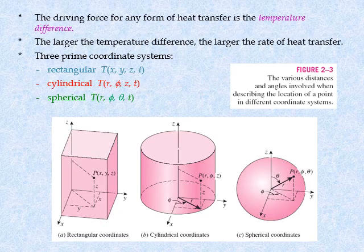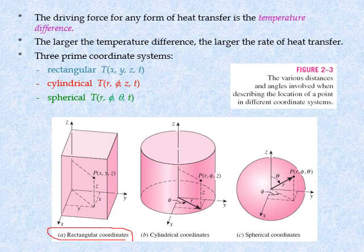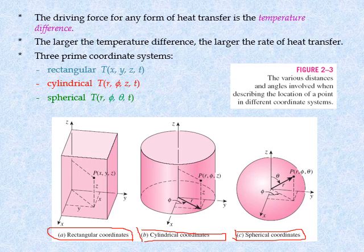The driving force for any form of heat transfer is the temperature difference. If a body has a temperature difference, there will definitely be heat transfer — the larger the temperature difference, the larger the heat transfer rate. Heat transfer can be analyzed through three prime coordinate systems: the rectangular system (x, y, z with time t), the cylindrical system (r, θ, z), and the spherical system (r, ψ, θ, with time t). Since heat transfer has a rate, it also depends on time.